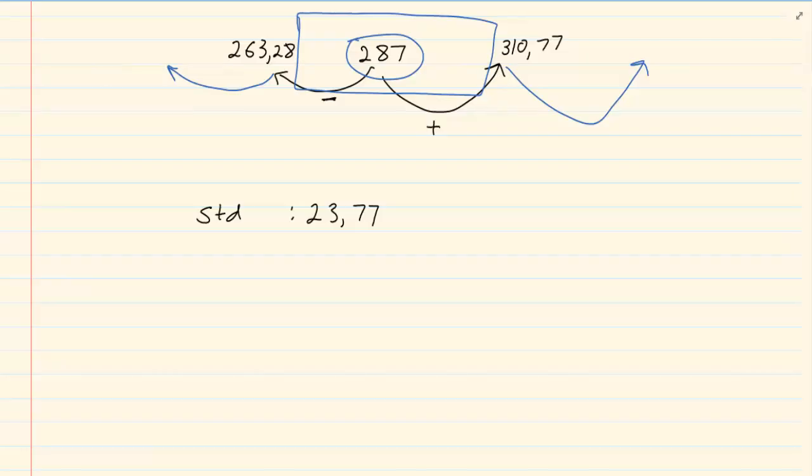Let us look at a second standard deviation. So we've got the one standard deviation we know it was 263,28 and 310,77. Now let's subtract again. So we're going to say 263,28 minus 23,77. 239,51. And if you say 310 plus 23,77 which is equal to 334,54.